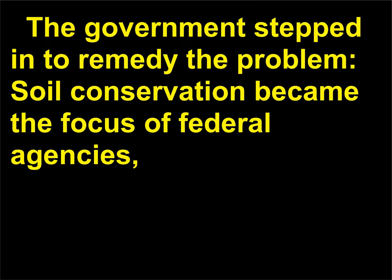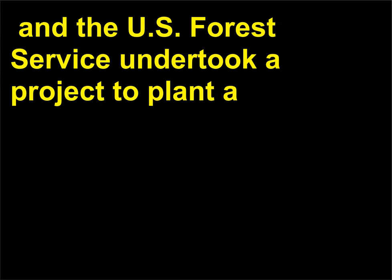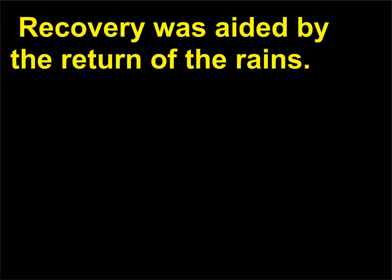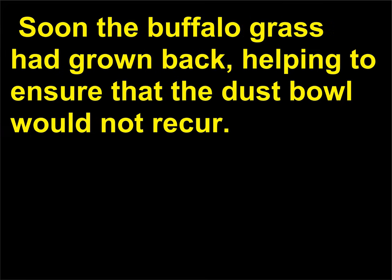The government stepped in to remedy the problem; soil conservation became the focus of federal agencies, and the U.S. Forest Service undertook a project to plant a shelter belt of trees within a 100-mile-wide zone from Canada to the Texas panhandle. Recovery was aided by the return of the rains. Soon the buffalo grass had grown back, helping to ensure that the Dust Bowl would not recur.